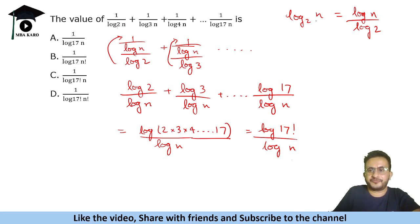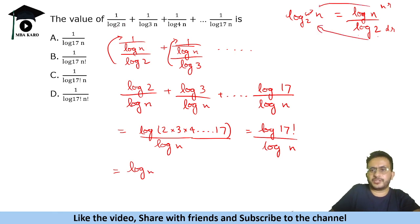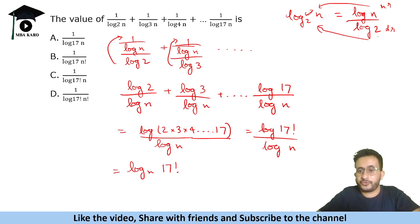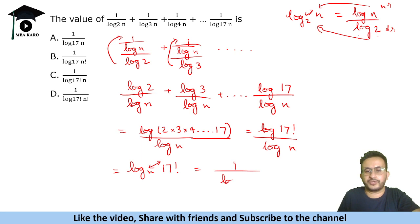The property says: if you have log(17!) over log n, the denominator goes to the base and the numerator becomes the argument — giving log base n of 17!. But since the original expression had 1 over something, we apply the reciprocal property from our first class: switching base and argument gives the reciprocal. So the answer is log base (17!) of n.